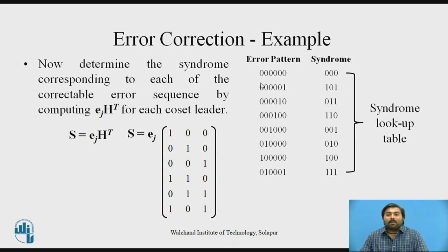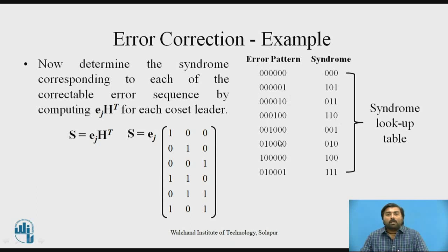There are 7 non-zero error patterns and one all-zero error pattern. For the all-zero error pattern, the syndrome is 000. For all other non-zero patterns, you get a particular syndrome. This syndrome lookup table will be helpful when implementing the decoder at the receiver side.